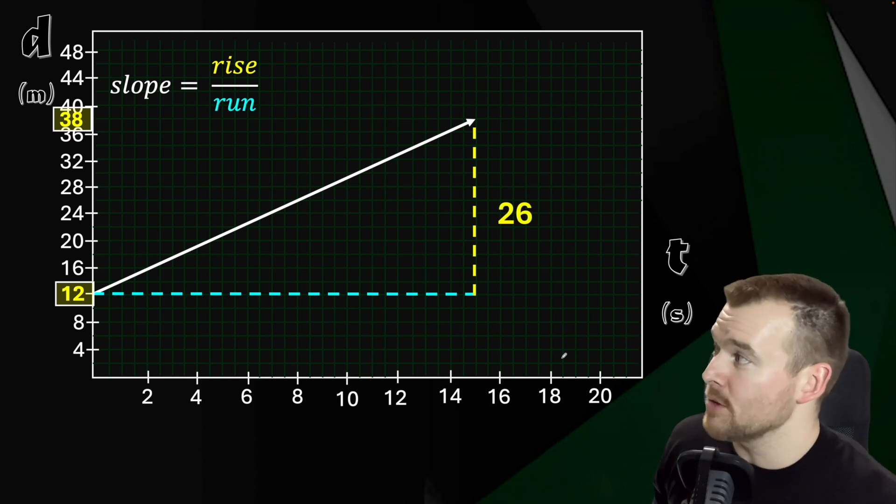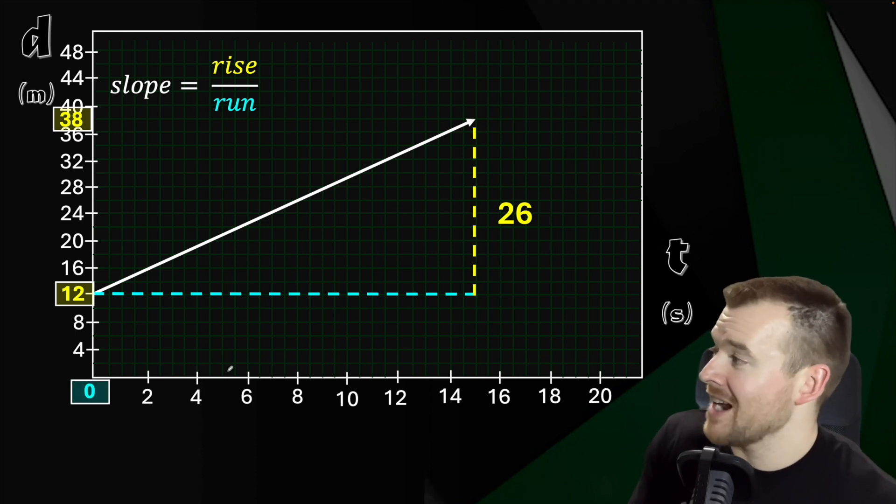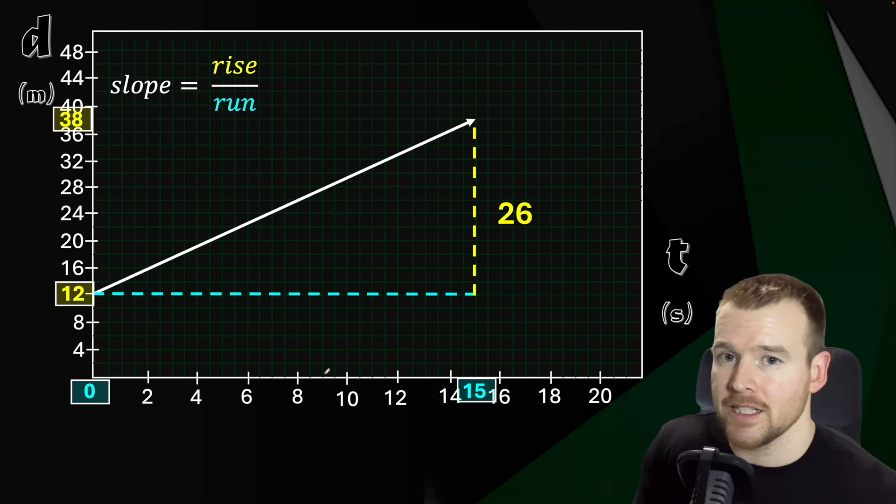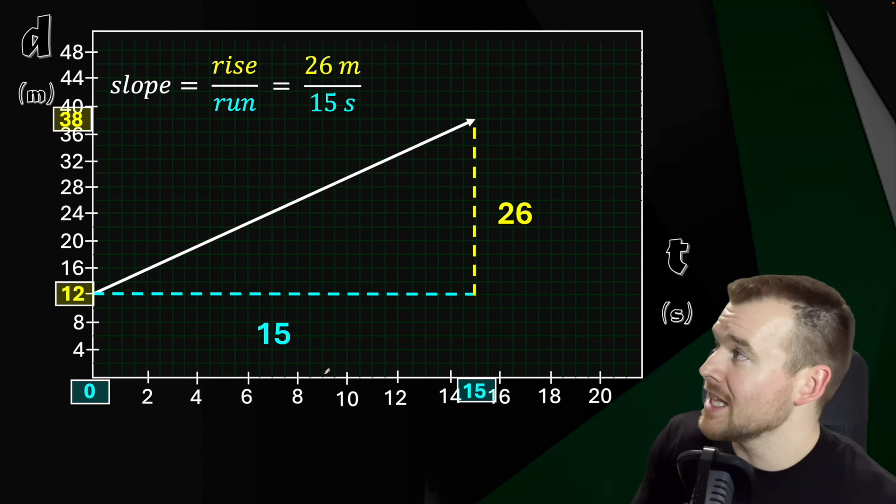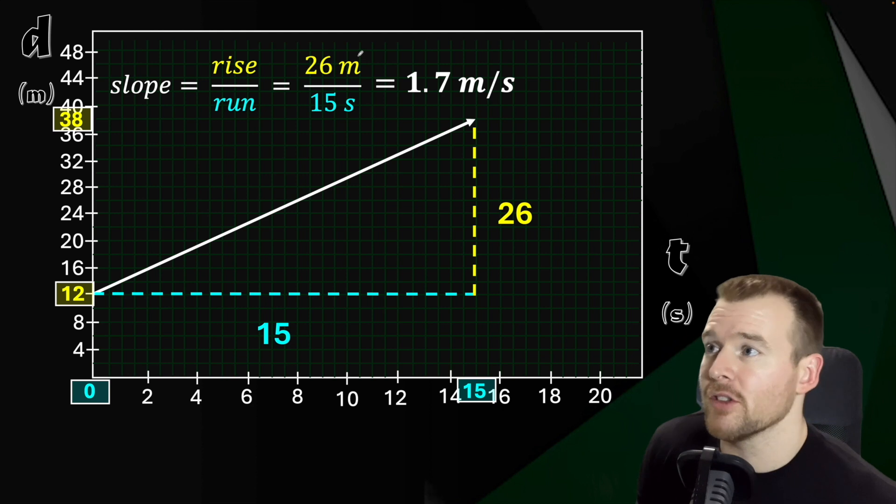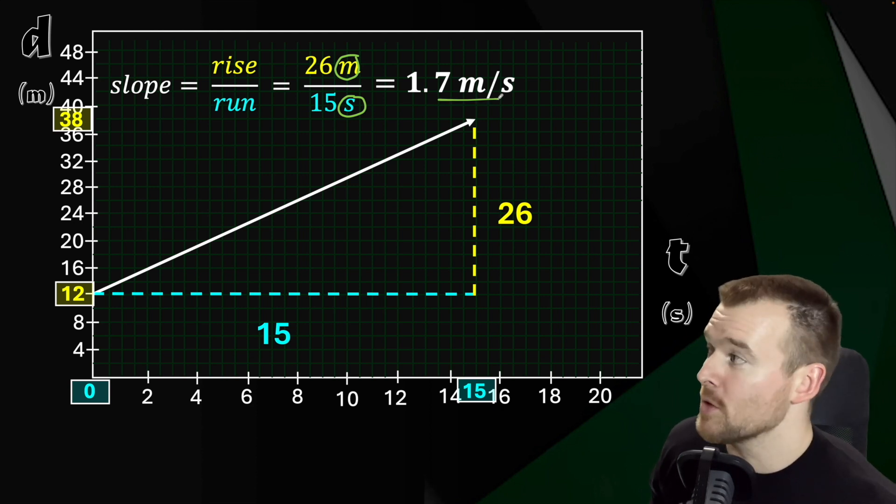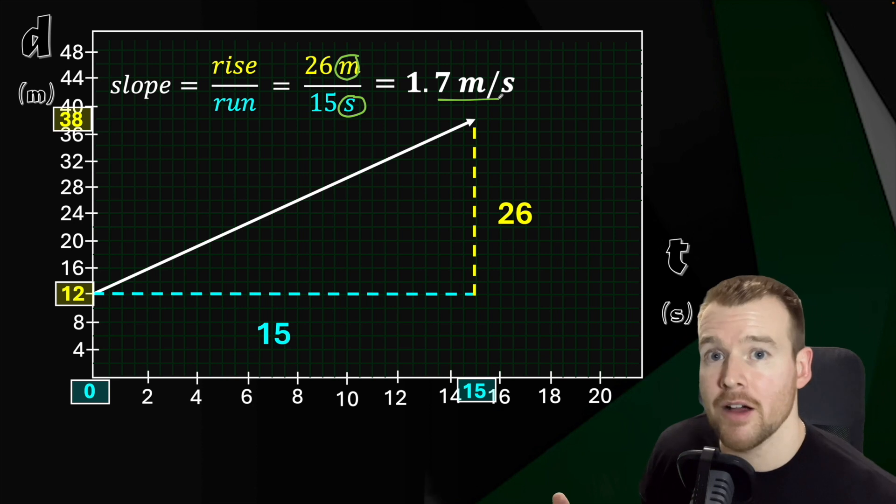So looking at my rise, 12 to 38 would be an increase of 26. The run's a bit easier in this case, starting over there at 0 and then coming to 15. 0 to 15, that's just going to be 15. So now that we know our rise and our run, let's throw that up into the calculation. 26 divided by 15 and we get our slope to be a value of 1.7. We can also see here that the slope is equal to the velocity because I have my meters on the Y divided by my seconds in the X and I get meters per second. So this is showing a velocity of positive or forwards, 1.7 meters per second.